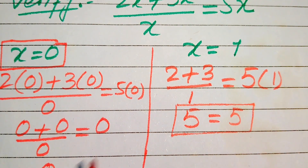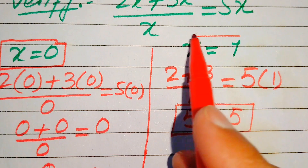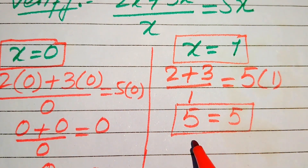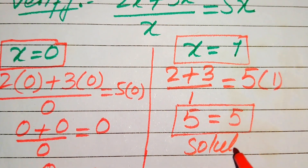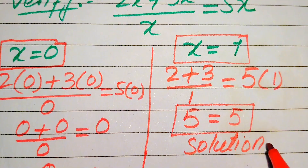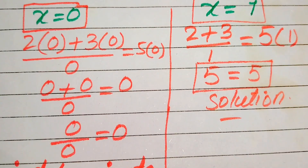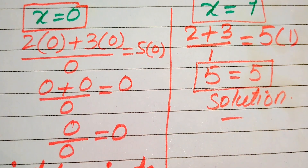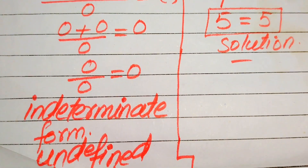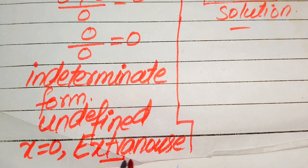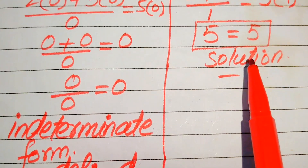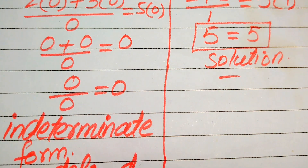This satisfies our given question statement, so we say that x equals 1 is the solution of the given equation. You now understand that a solution which cannot satisfy the given question statement is called an extraneous root, and a solution which does satisfy the given question statement is called the solution of that equation.